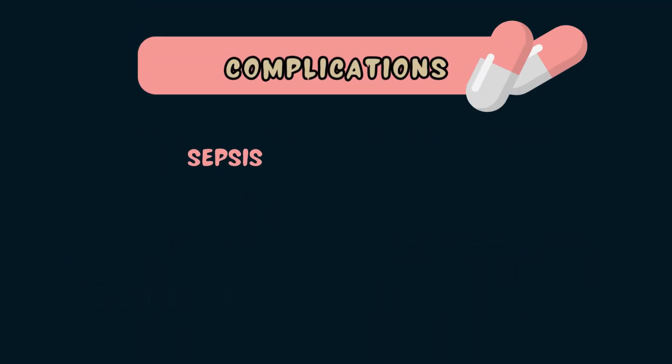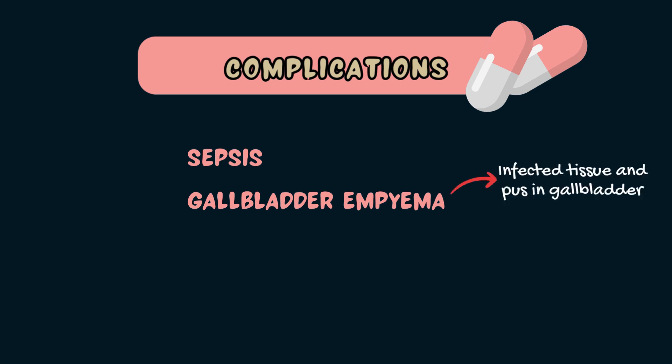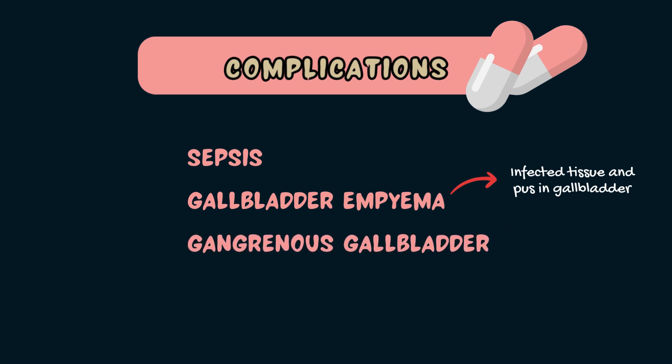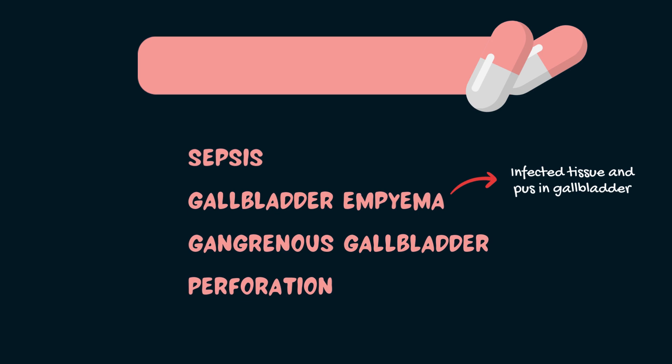The complications of acute cholecystitis include sepsis, gallbladder empyema — which is when the gallbladder fills with infected tissue and pus — a gangrenous gallbladder, and perforation, where there is a hole made through the gallbladder.